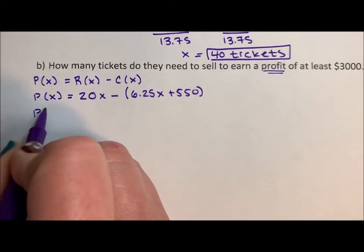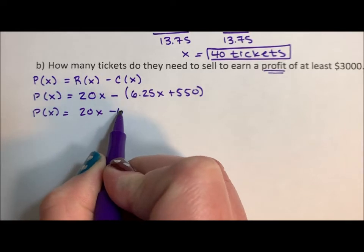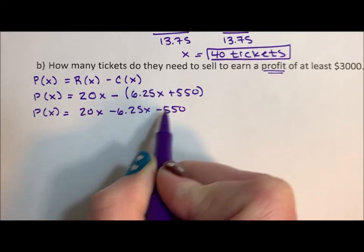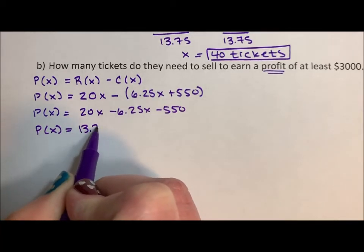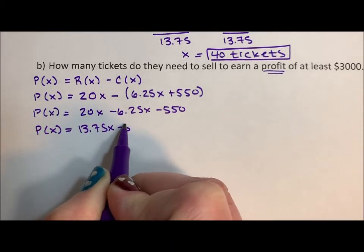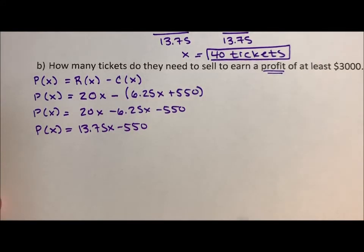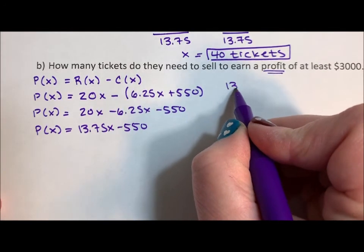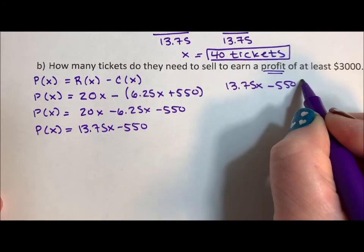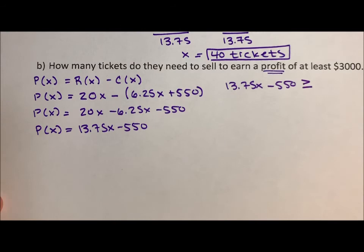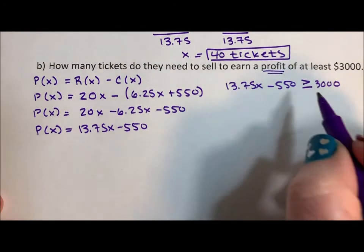So the profit is 20x minus 6.25x minus 550. So the profit is 13.75x minus 550. Now we want our profit to be at least $3,000, so we want 13.75x minus 550 to be greater than or equal to $3,000.